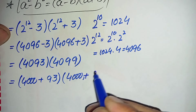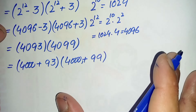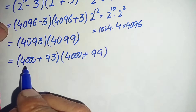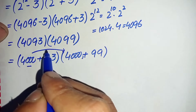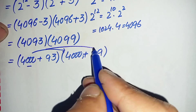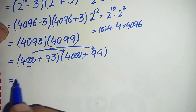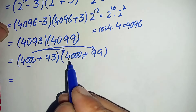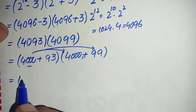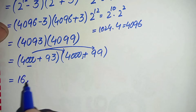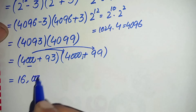We can write 4093 as 4000 plus 93, and we can write 4099 as 4000 plus 99. First we will multiply 4000 with 4000: 4 times 4 is 16, so from here we will get 16 million.